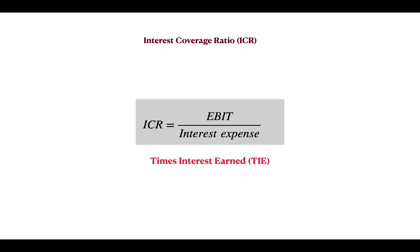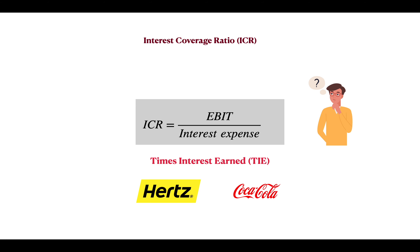The higher this number, the better the financial situation of the company. In this video we'll go over how to calculate and interpret this ratio, and we will also discuss two real-world examples: Hertz and Coca-Cola. You will see how the car rental company Hertz was actually struggling since 2018 in paying their interest and ultimately went bankrupt in 2020.